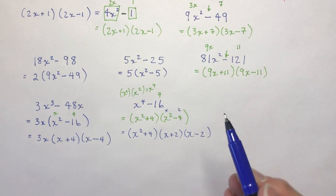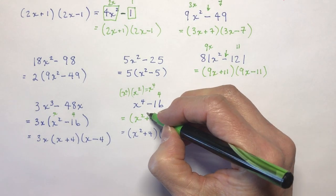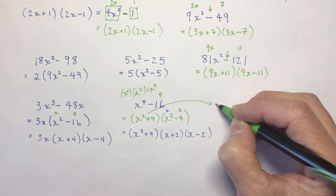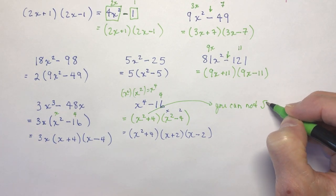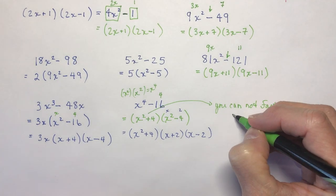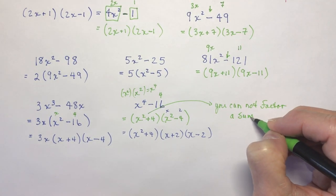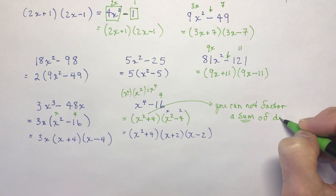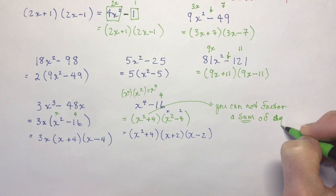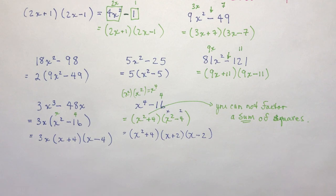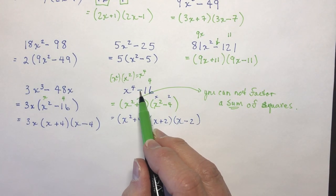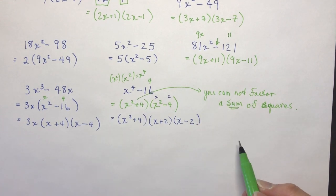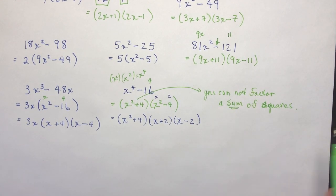What you should know is that you cannot factor a sum of squares — my students try to do that sometimes. It has to be a difference of squares, not a sum. Look for that minus sign. In grade 12 you'll do sum of cubes and difference of cubes, but you don't have to worry about that yet.